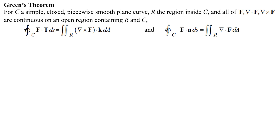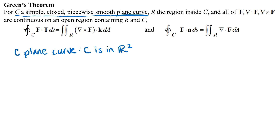Then we'll do an example where we use this theorem. First of all, there's some information in this first line about our curve. Starting at the end and working backwards: it says that our curve is a plane curve, which means that the curve is in R2. Since our curve is in R2 and we have line integrals defined over that curve, our vector field F will also need to be in R2. Green's theorem is for curves and vector fields in R2.